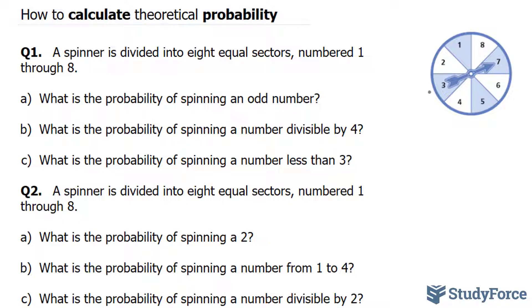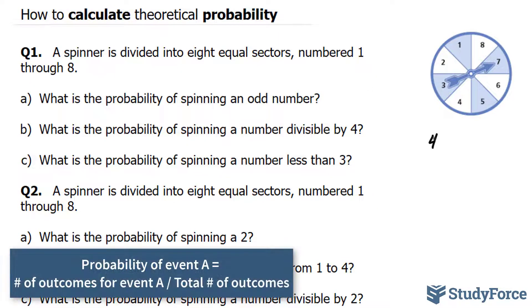Let's start off by counting the number of odd numbers. One, two, three, and four. There are four odd numbers, and there are a total of eight numbers. So the probability of spinning an odd number is simply half.